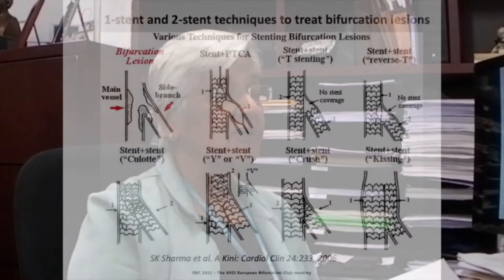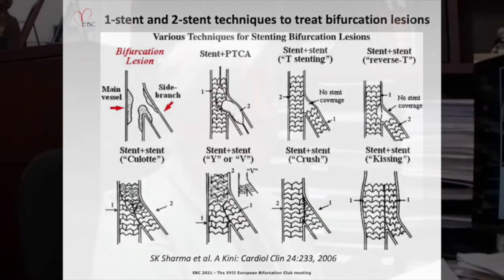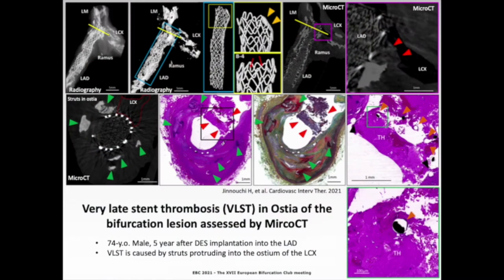These are the common techniques used for implanting stents. We know that one stent only has the best results. However, there are lesions where we cannot deploy just one stent and need two, and there are various techniques. I'm going to concentrate on what happens when we put in a stent. Here is a bifurcation lesion we recently reported that showed very late thrombosis in the osteo-bifurcation lesion assessed by micro-CT.